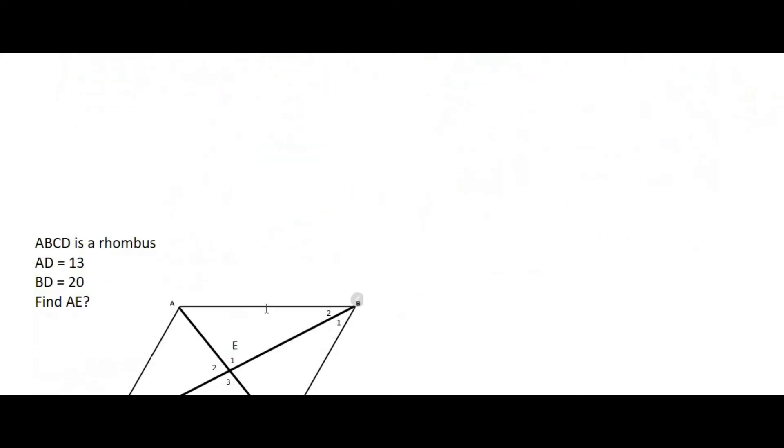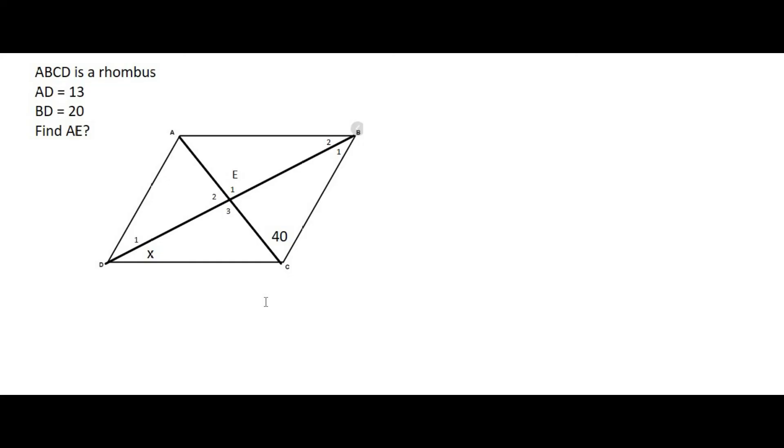Moving on to the next question. Here they tell us that ABCD is a rhombus. AD has a length of 13. So I'm going to fill that in over here. BD, so this long diagonal over here, has a length of 20. Okay, so that entire diagonal is 20. Find AE. So AE is this little guy over here. Or let me do it in blue. So AE is that one over there. Now, here's the way to do a question like this. Whoops, I nearly erased the entire question.